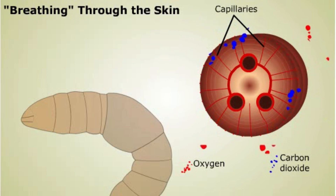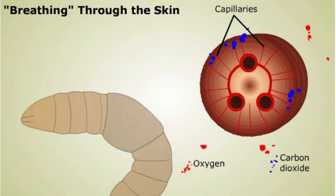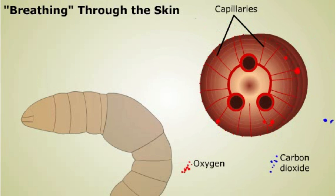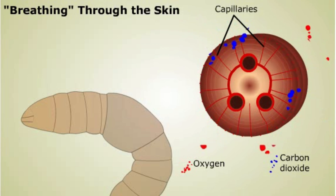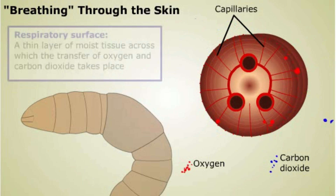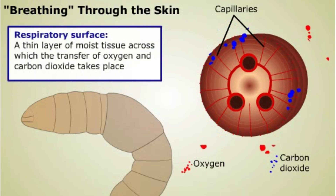In all animals, oxygen from the air must first be dissolved in water before it can be transferred to the body's tissues. Animals living outside an aqueous or moist environment require special adaptations that keep the respiratory surface moist.